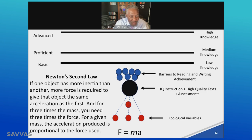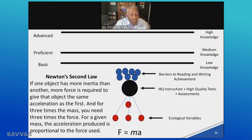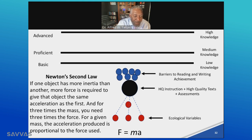So the prudent thing to do is: how do you increase the force and momentum? Newton's second law says if one object has more mass than another, more force is required to give the object the same acceleration as the first. So how do we give high-quality, research-based instruction and high-quality text more force to break down the barriers?